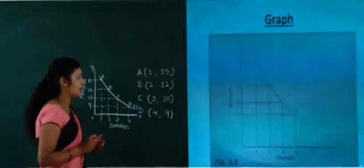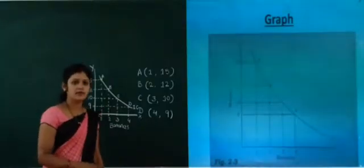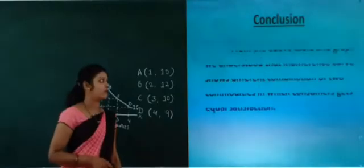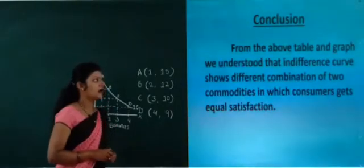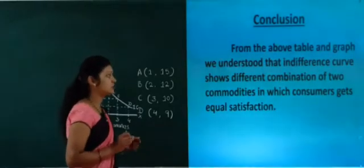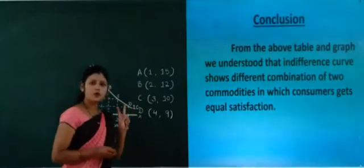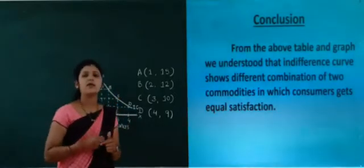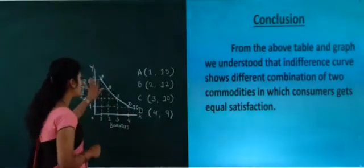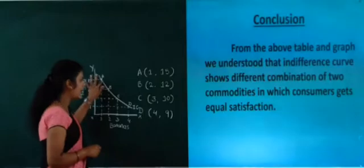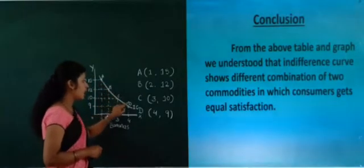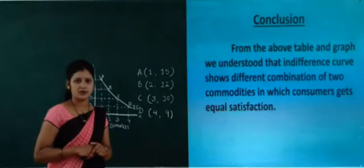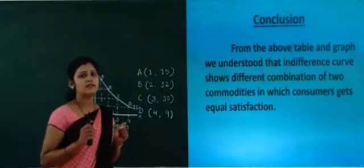Now let us see the conclusion of the indifference curve. From the above table and graph, we understood that the indifference curve shows different combinations of two commodities — bananas and mangoes — in which the consumer gets the equal level of satisfaction. Whichever combination you choose — A, B, C, or D — you will get the same level of satisfaction from each combination.